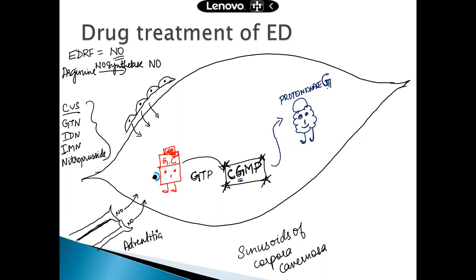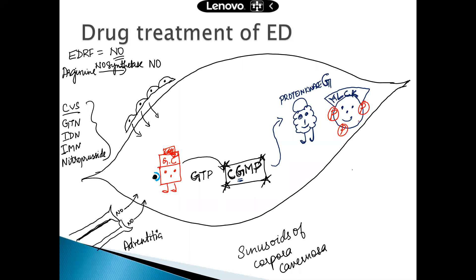This protein kinase G throws phosphate bombs on a compound called myosin light chain kinase. As the name indicates, myosin light chain kinase is involved in contraction and relaxation of smooth muscle, since actin and myosin are involved in muscle contraction and relaxation. Protein kinase G switches off the myosin light chain kinase by phosphorylating it.